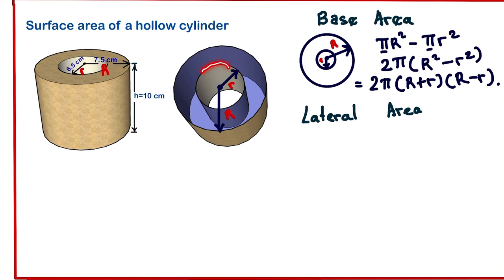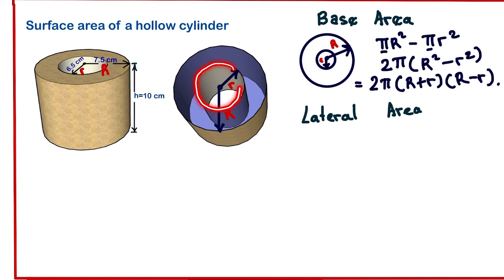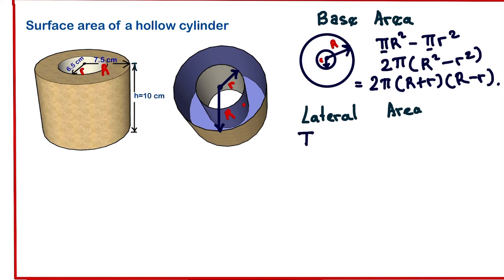Now let's look at the lateral area. A hollow cylinder has an outer cylinder and an inner cylinder, both with no bases. To get the lateral surface area of a cylinder we use circumference times height. So we need the circumference of the outer circle times h, plus the circumference of the inner circle times h, giving us 2πRh + 2πrh.